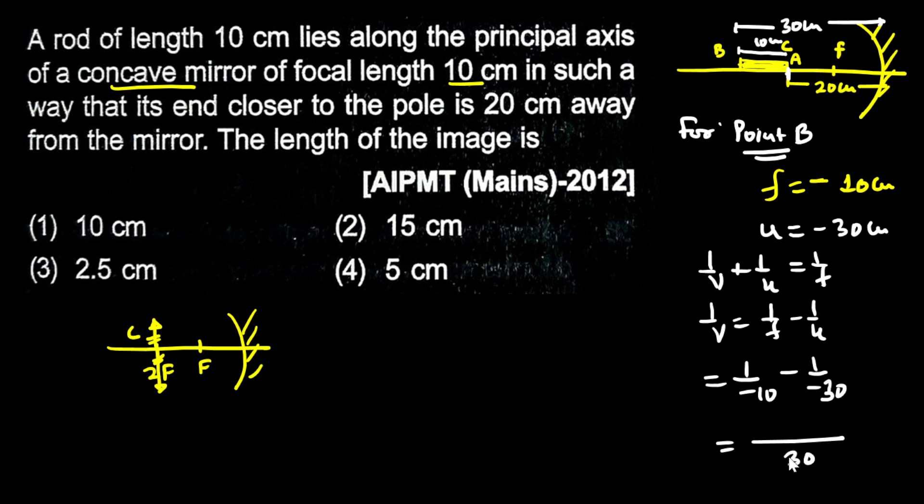Taking LCM of 30, this becomes minus 3. Minus and minus is plus, so this is minus 2 upon 30, which means minus 1 upon 15. So the value of V is minus 15 cm.